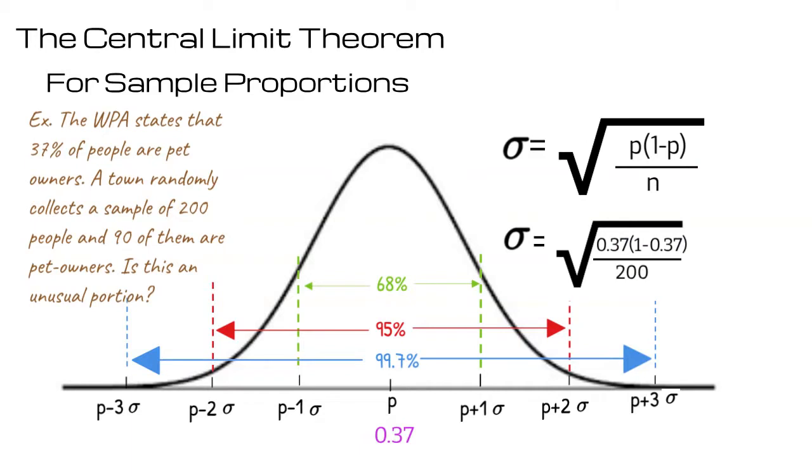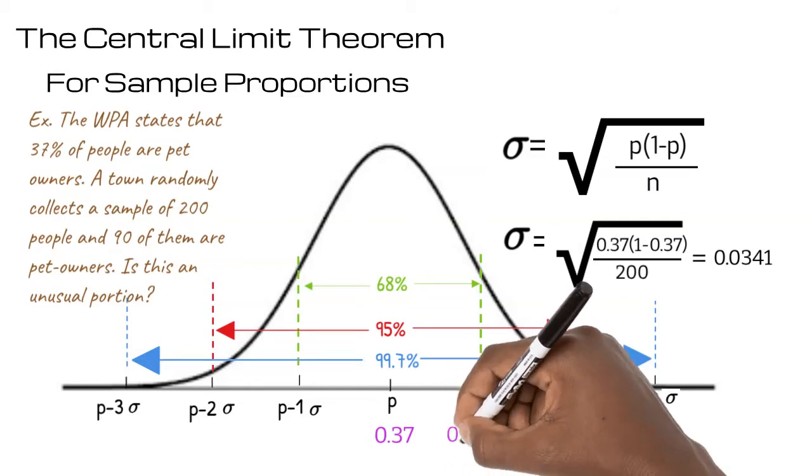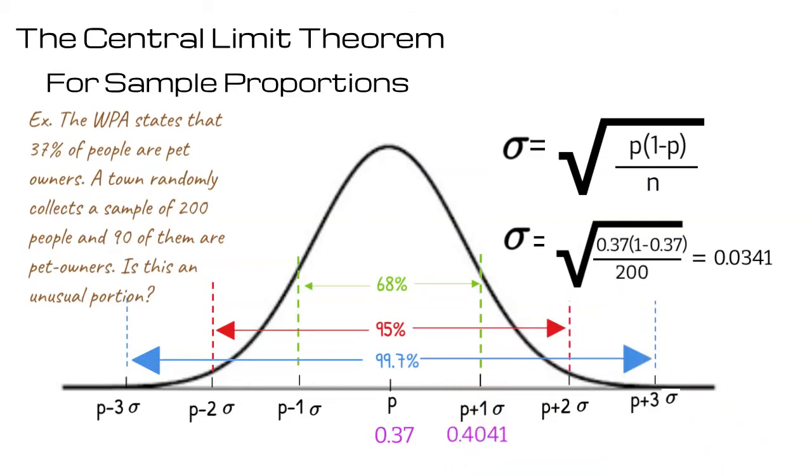This gives us 0.0341. Now we add 0.0341 to 0.37 to get 0.4041. We add the standard deviation again to get 0.4382 and once more to get 0.4723.